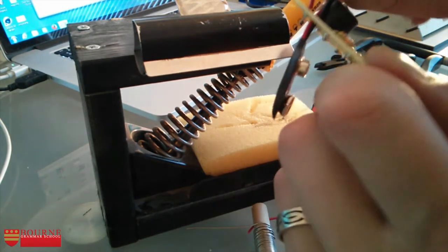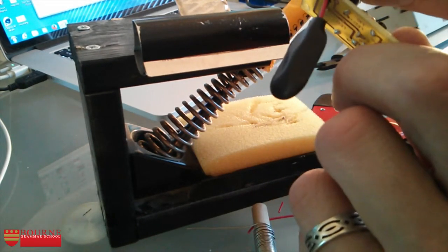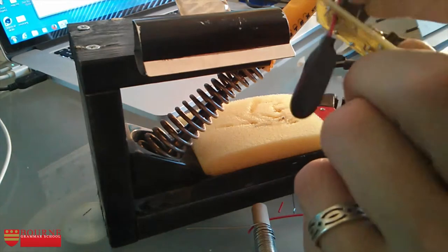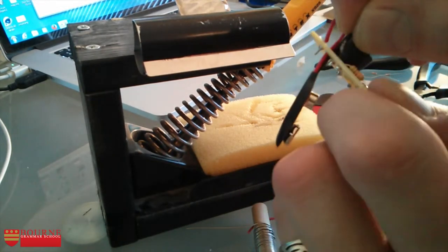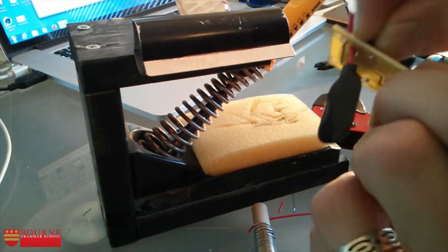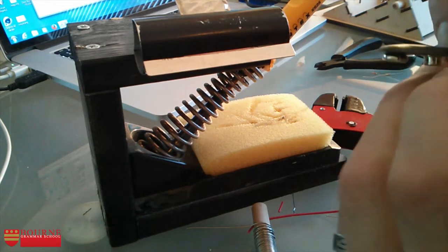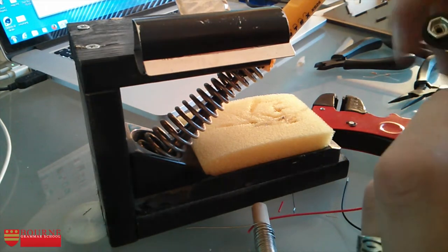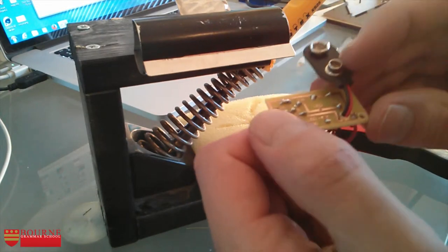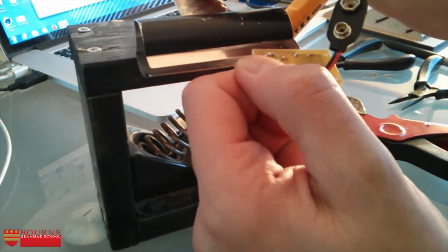I'm going to do the same with the negative lead of the battery snap. I'll take my negative lead and feed it around. It's a little bit tricky to get in sometimes. There we go, that's through. That can go back in the bulldog clip.